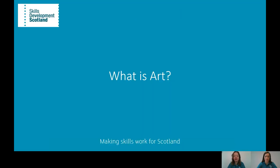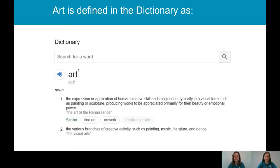So let's kick off with the question: what is art? Obviously this is a question that is completely subjective — you will have completely different opinions to both Morna and I, and that's absolutely fine. In the dictionary, art is defined as the expression or application of human creative skill and imagination, typically in a visual form such as painting or sculpture, producing works to be appreciated primarily for their beauty or emotional power. It mentions painting, music, literature and dance.